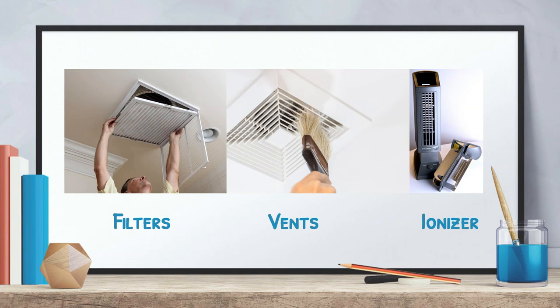A third approach is using an ionizer near your workspace. The ionizer brings air through as a second filtration system and deposits particles onto negatively charged metal plates. You pull the plates out, wipe off the collected dust, and keep your workspace clean. We keep one near our scanning workspace to catch any dust that gets past our other environmental controls.